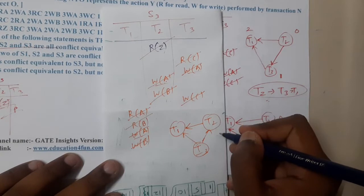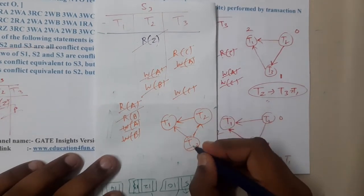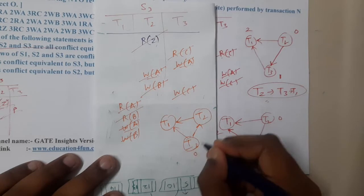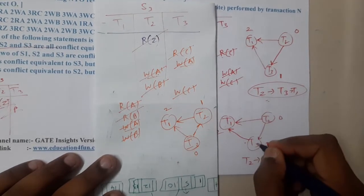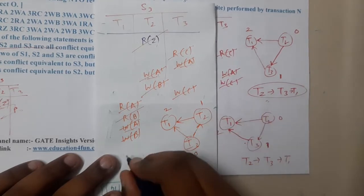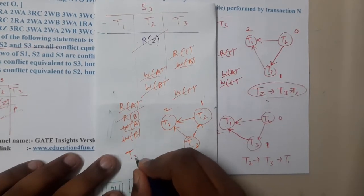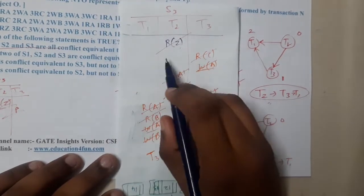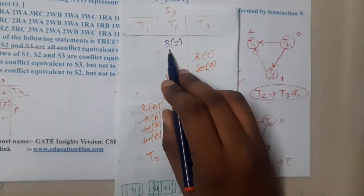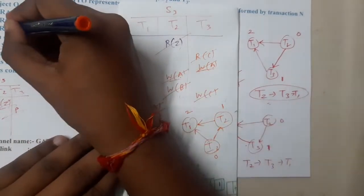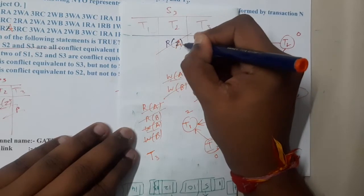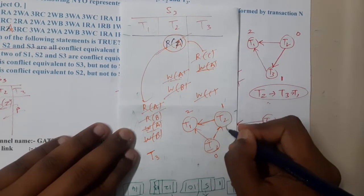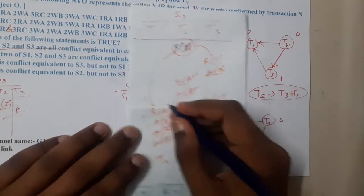Let me cross-check the question — I had a doubt. Read of Z... actually this is a printing mistake! It should be Read of A, not Read of Z. So if it is Read A, then T2 will clash with this as well as this — giving edges from T2 to T1 and T3. But wait — here we also have T3 going to T2, which means there is a loop in the graph. Hence, for this particular schedule S3 it is not conflict serializable.